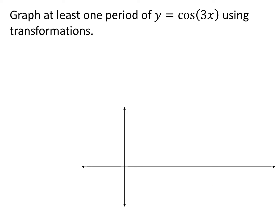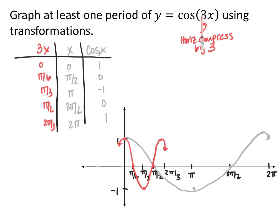Here we have the function y equals cosine of 3x. The 3 being multiplied by x is going to horizontally compress our function by 3. For my table, I always do the inverse for my x's, so I multiply everything by 1/3, giving me 0, pi over 6, pi over 3, pi over 2, and 2 pi over 3. The cosine y-coordinates are 1, 0, negative 1, 0, 1. So I start at the high point, go middle, low, middle, high. Make sure at the ends it turns back down and doesn't point up like a parabola, because it would repeat for another period.